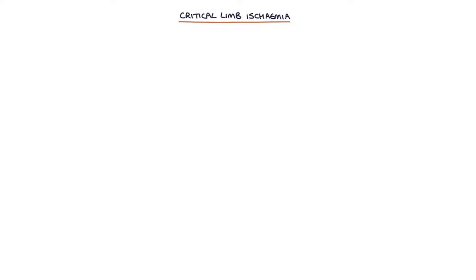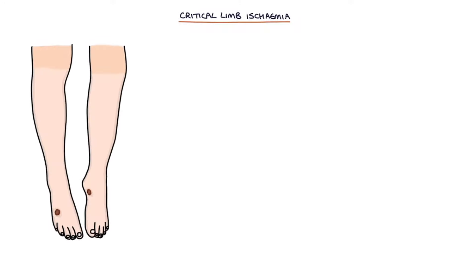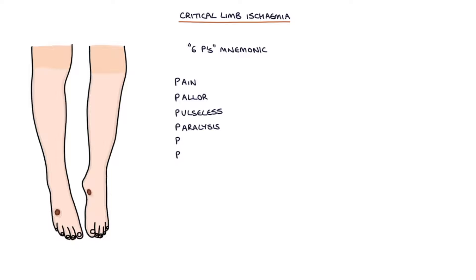Next let's talk about critical limb ischemia. The features of critical limb ischemia can be remembered with the six P's mnemonic. These six P's are pain, pallor, pulseless, paralysis, paresthesia — which is an abnormal sensation or pins and needles — and finally perishingly cold.